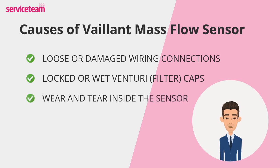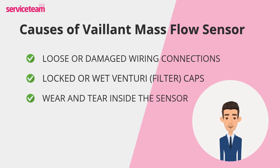Over time, the internal components of the mass flow sensor can degrade or fail. Age-related wear, heat exposure, or continuous operation can prevent the sensor from accurately monitoring gas and air flow. This internal failure can result in poor boiler performance or complete shutdown.